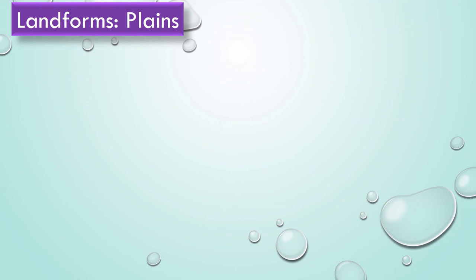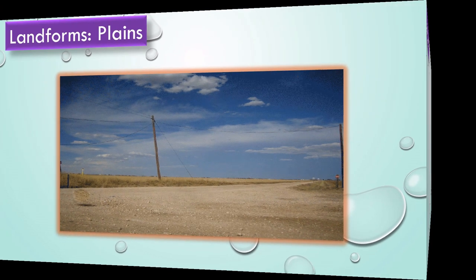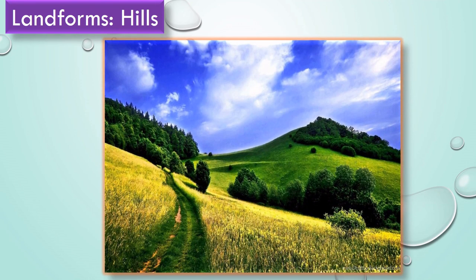Now, let us learn about landforms. As we all know, one-third of the area is covered by land. So there are different types of landforms on the Earth. Flatlands are called plains. Many people live in the plains. Highlands are called hills. We can see the green color region represented as hills.